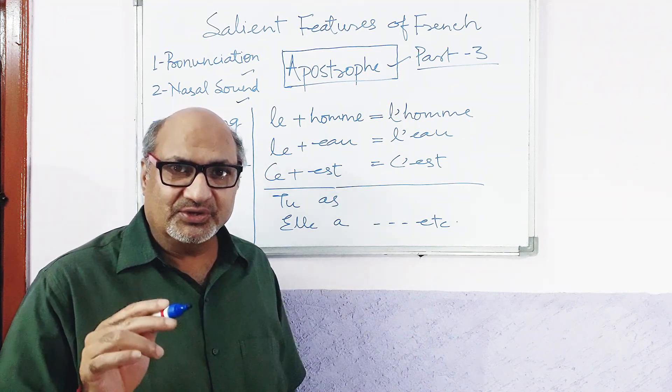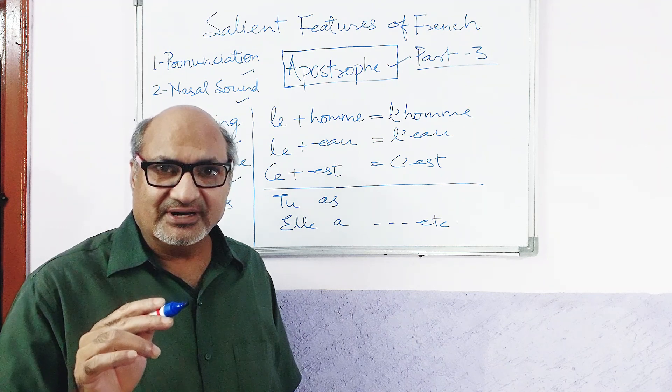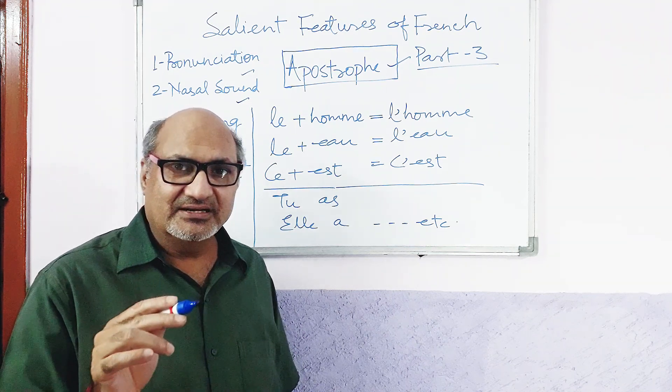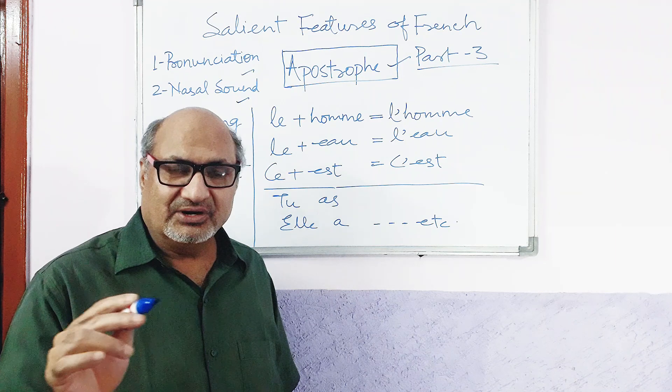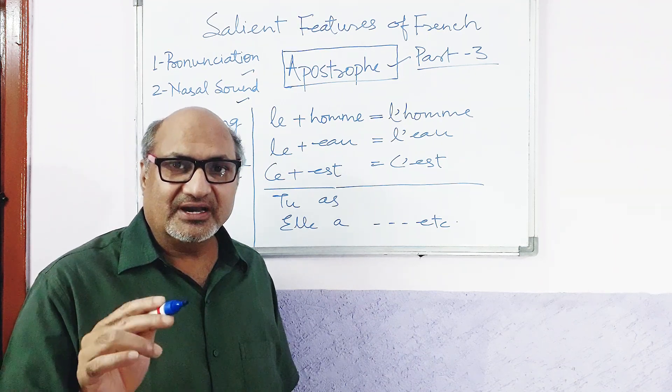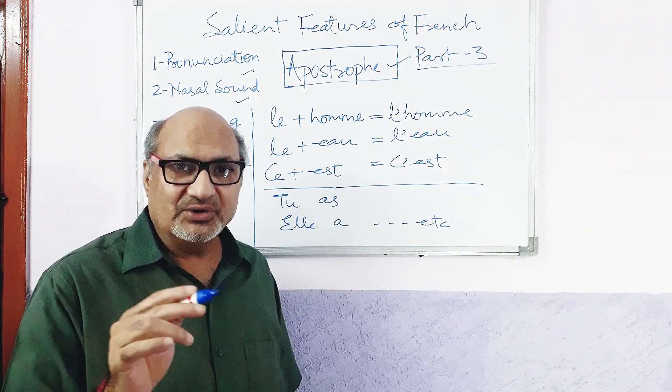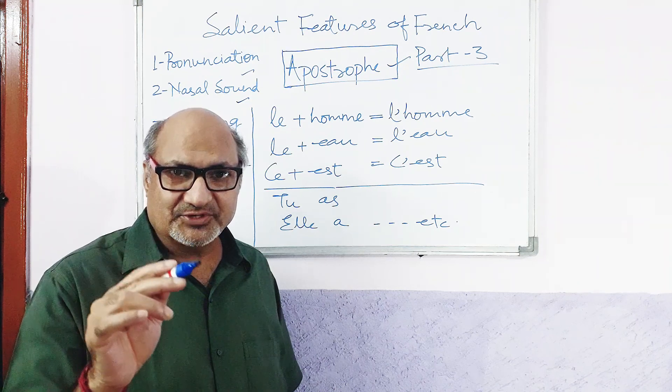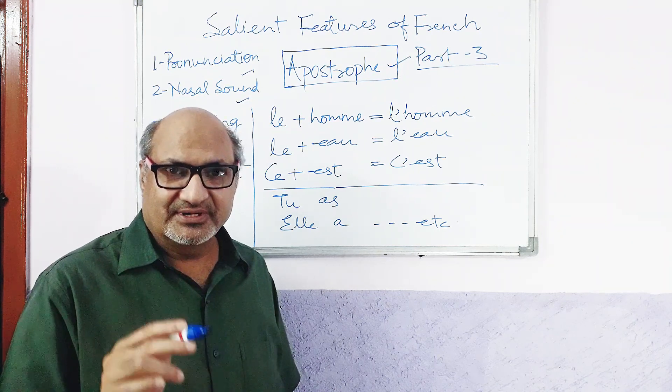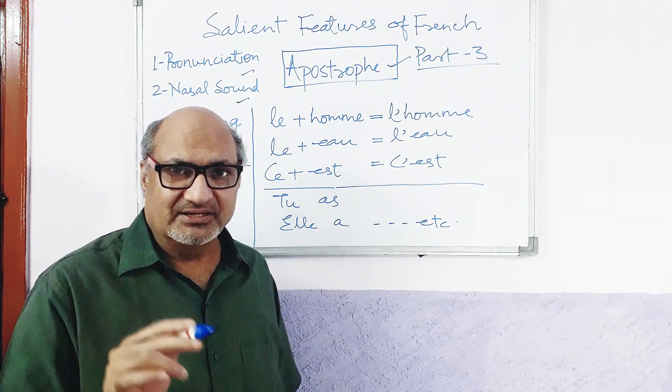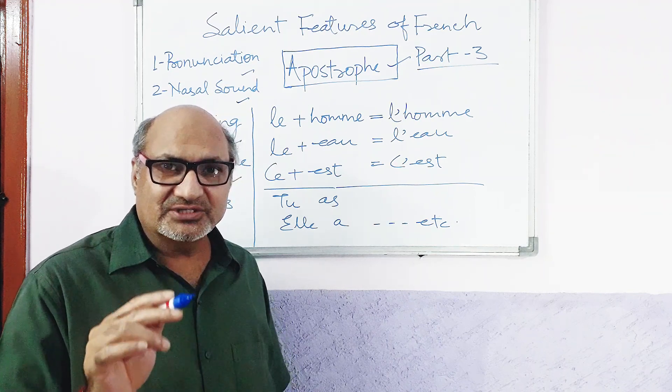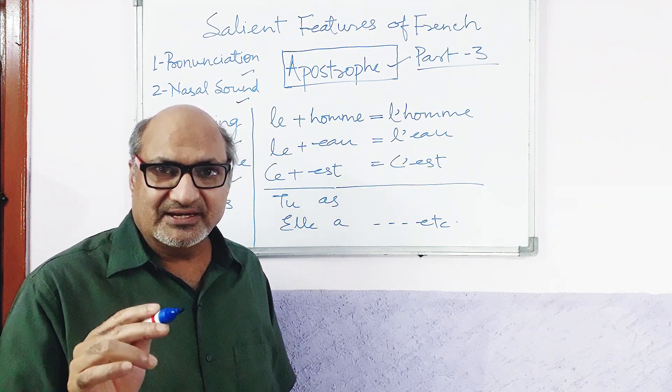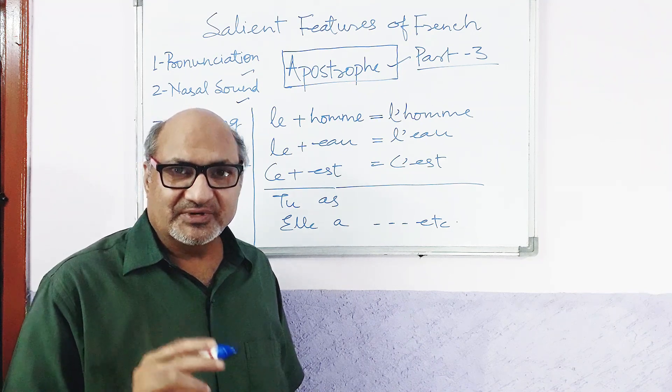Number two. To denote omission of any letter from the word. Like, do not or don't. In case of don't, d-o-n and apostrophe is put in place of o. Then t, don't. It denotes that a letter is missing from here.